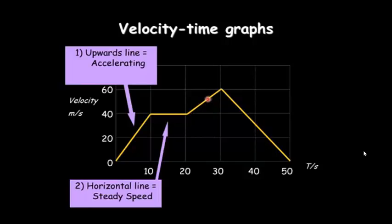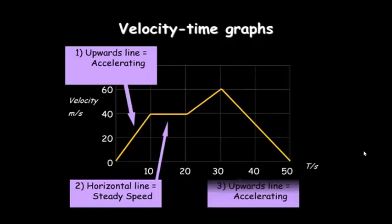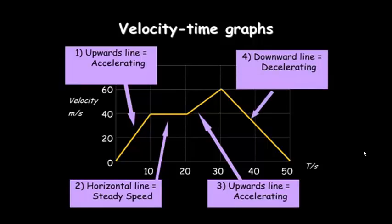You can see the line goes up again here. This means that it's accelerating again until it gets to a maximum speed here of 60 meters per second. And then the line going all the way back down to 0 means that it's decelerating. The opposite of accelerating means slowing down until it comes to rest after 50 seconds.